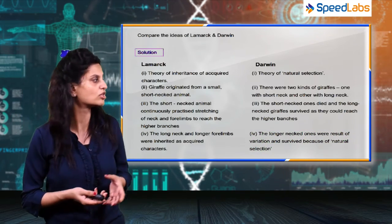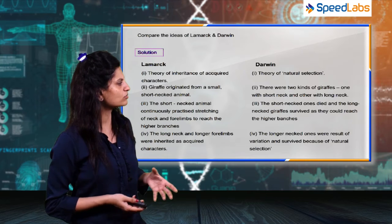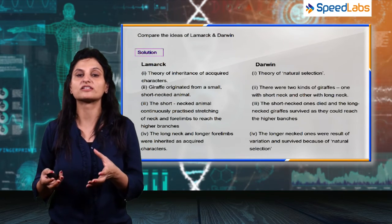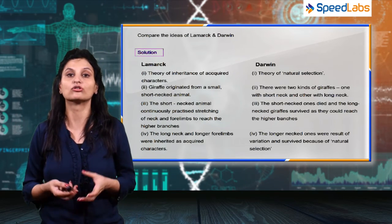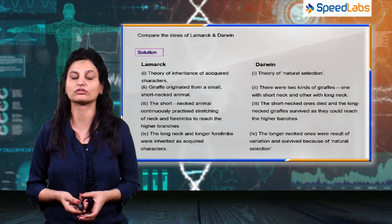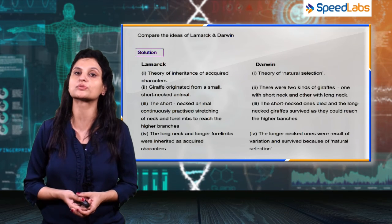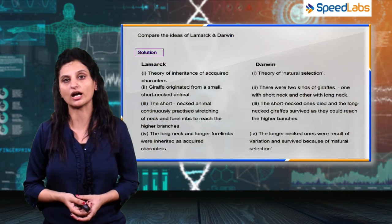According to Darwin, acquired characters do not pass from one generation to the other. The long neck survived because of natural selection and not because it was an acquired character. These were the important points of differences between Lamarck's theory and Darwin's theory.